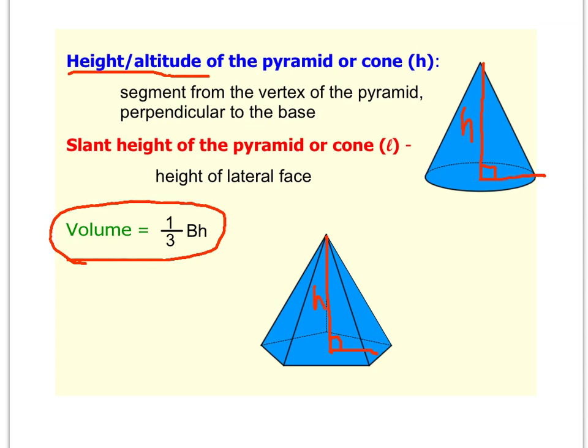There's another height that's going to come into play when you're dealing with pyramids or cones, and that is something that we refer to as this italic L, and that is the slant height of the pyramid or cone. What it is, it's actually the height of the lateral face.